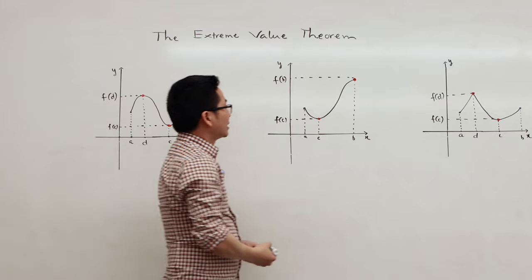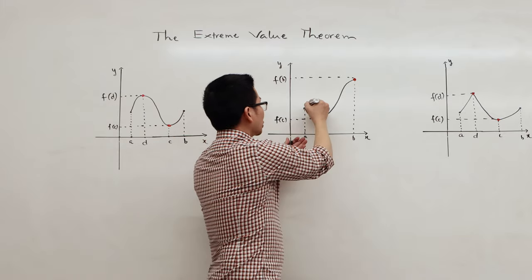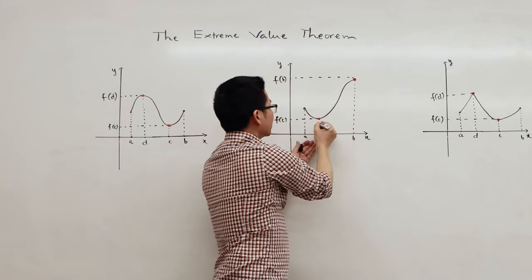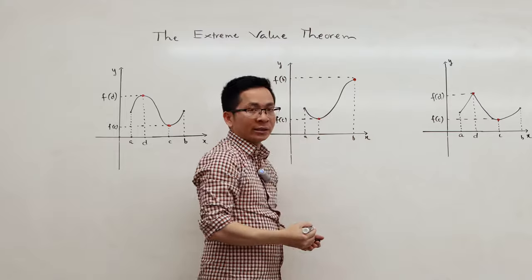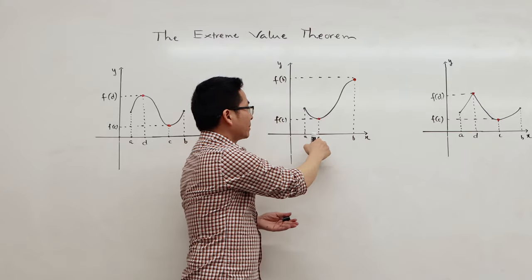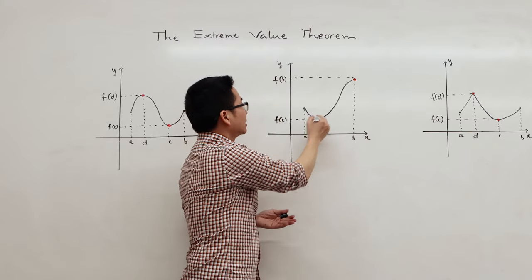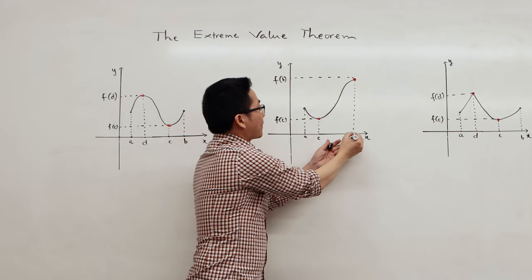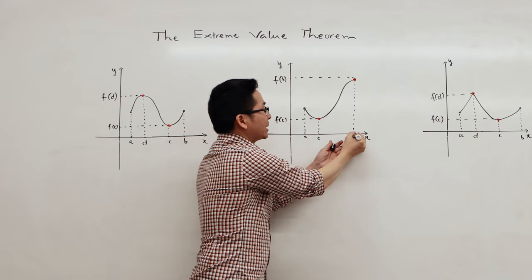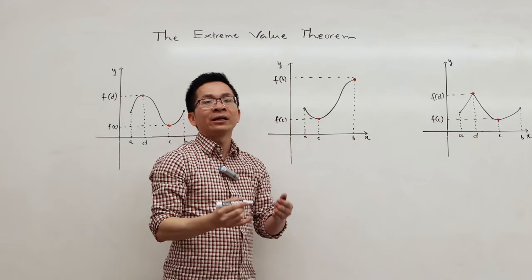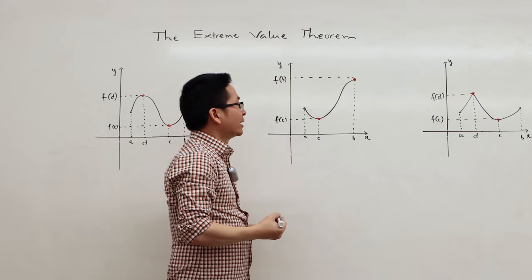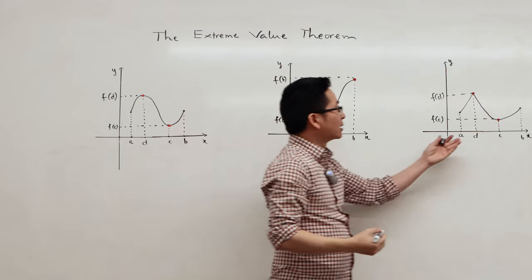In the second figure, this is the graph of a continuous function on the interval ab. f has an absolute minimum at c, and f has an absolute maximum at b, which is one of the end points.